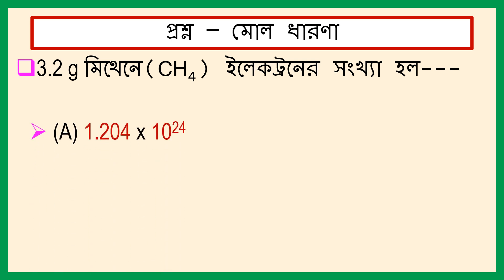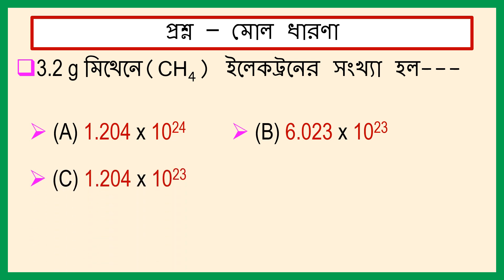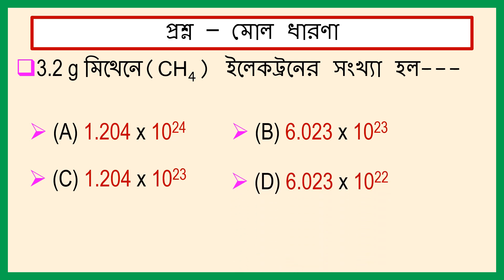Option A: 1.204 into 10 to the power 24. Option B: 6.023 into 10 to the power 23. Option C: 1.204 into 10 to the power 23. Option D: 6.023 into 10 to the power 22.